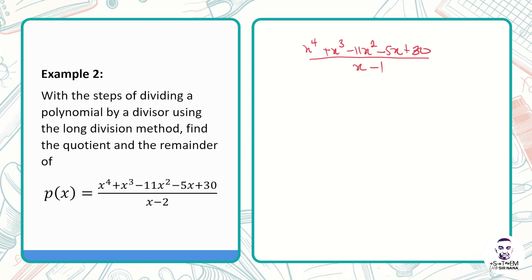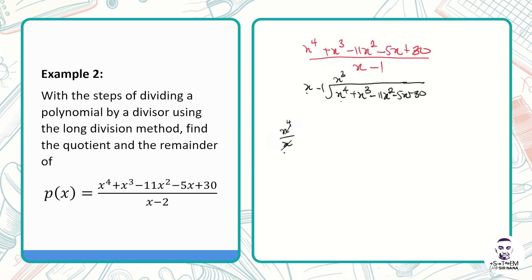We are going to use the long division method. Our divisor is x - 1, and our dividend is x⁴ + x³ - 11x² - 5x + 30. The first step: we take x and divide into x⁴, which gives us x³. We then multiply x³ by the divisor x - 1, giving us x⁴ - x³.